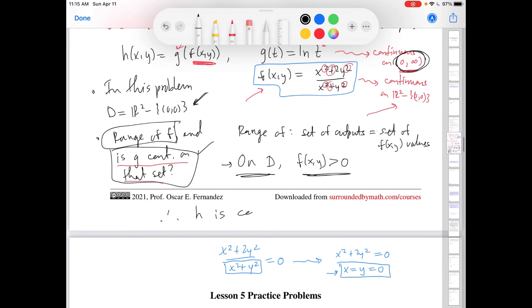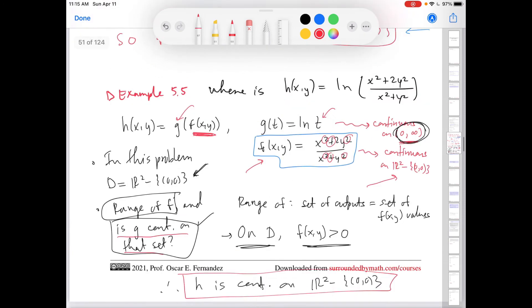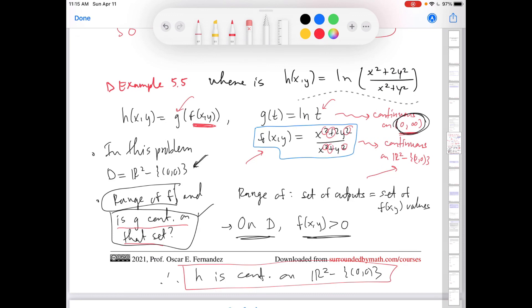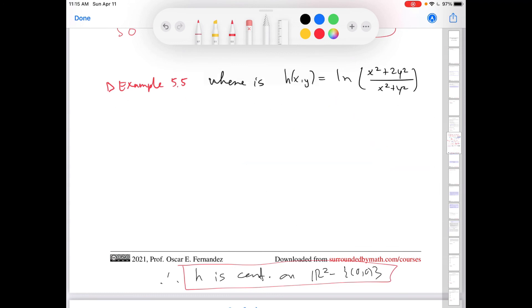So therefore, h is continuous on d, which is R² minus the origin. This is our conclusion and I have tried very hard here to follow the letter of the law, so to speak, which is what the statement said. I'm now going to redo this in about 30 seconds the super fast way. And the super fast way is going to say, you know what, this function, everything's positive, so is positive, positive everywhere, is never equal to zero. Okay, those are just observations. That's the first one. Number two, ln(t) is continuous on (0,∞). Therefore, h is continuous on R² minus the origin. Okay? That's the very quick way to do this.